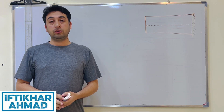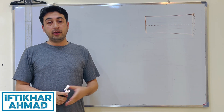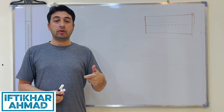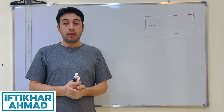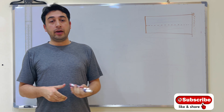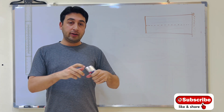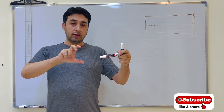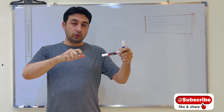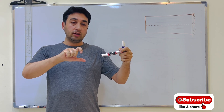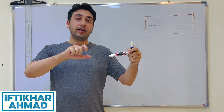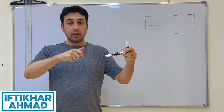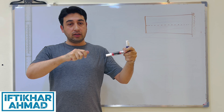In this video we will learn what torsion is and derive the torsion formula. Torsion is when we apply torque to a shaft. If I have a shaft and I apply a torque to it, it will twist. This is known as torsion.